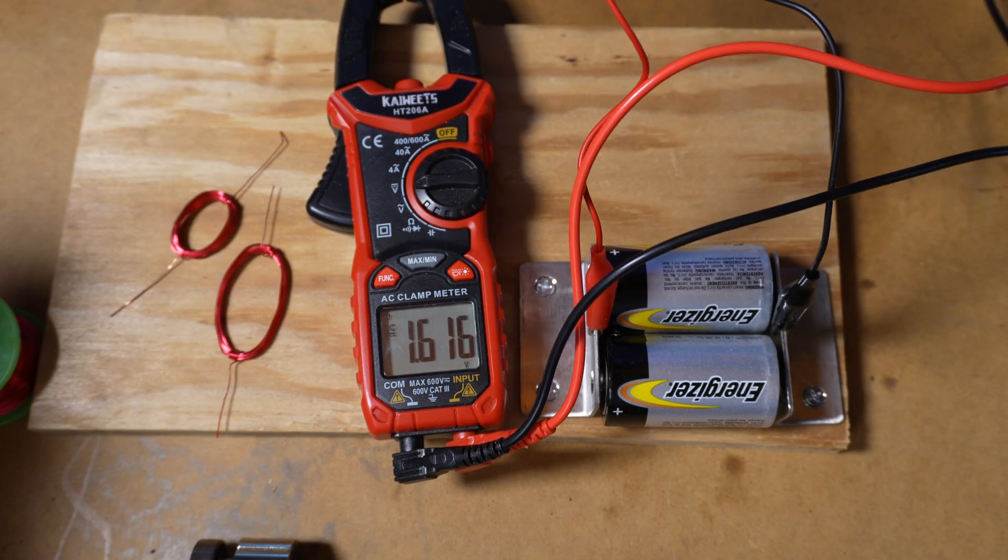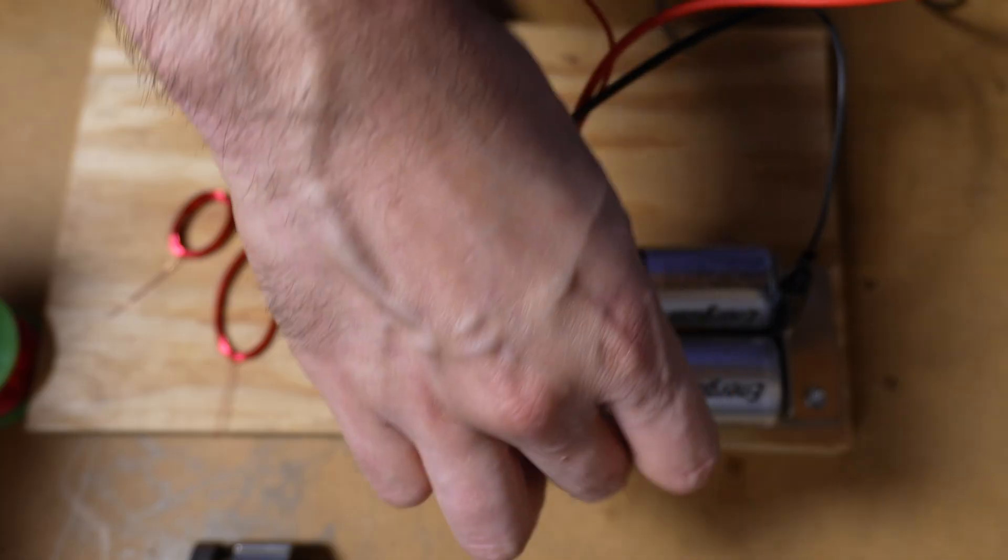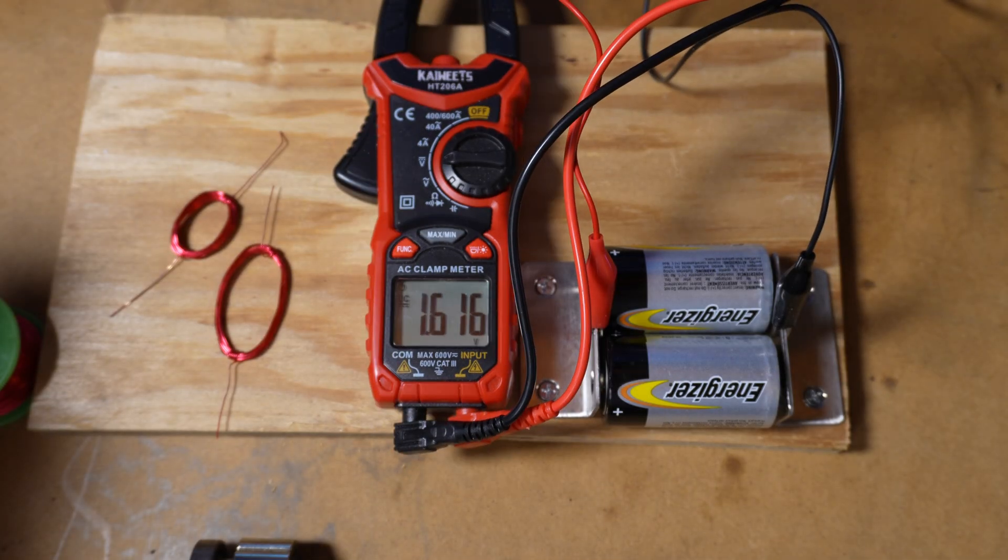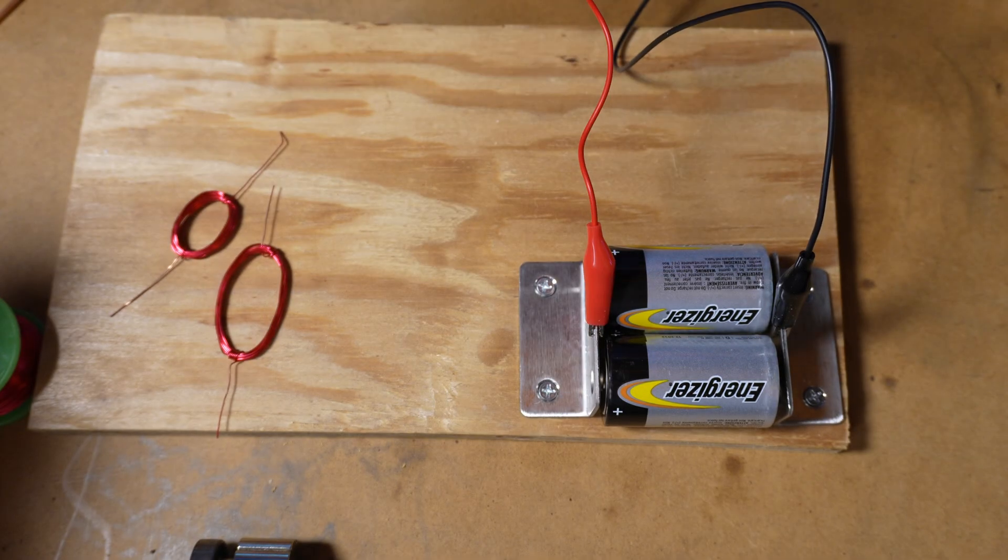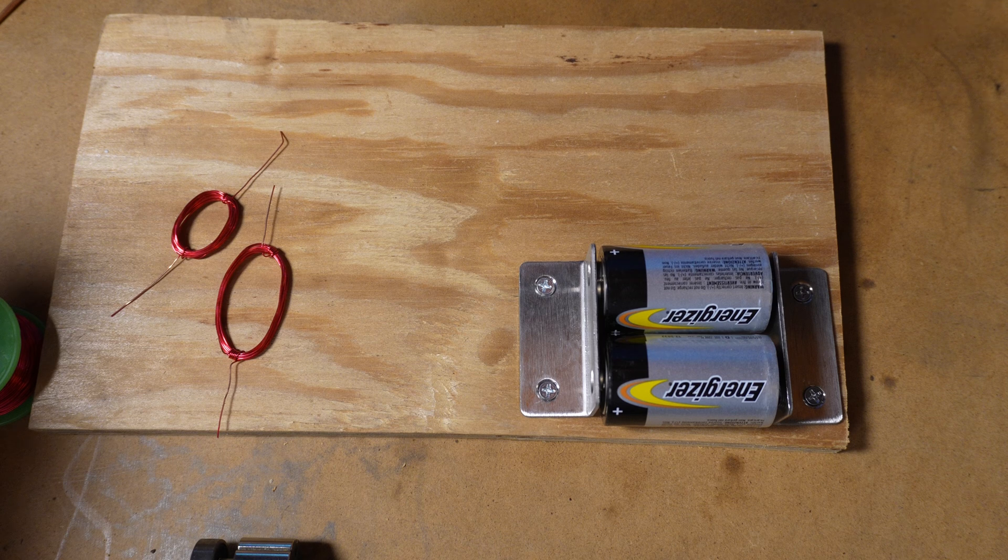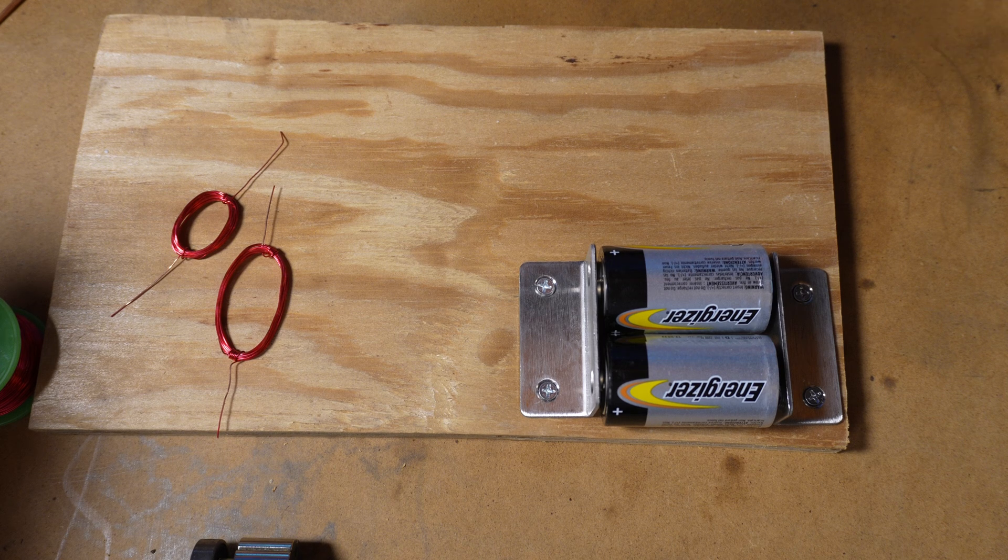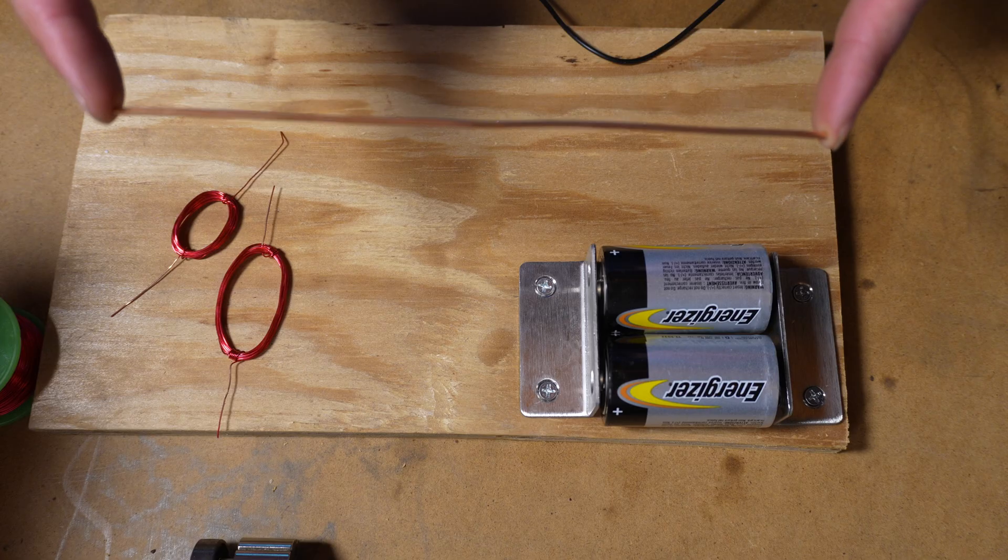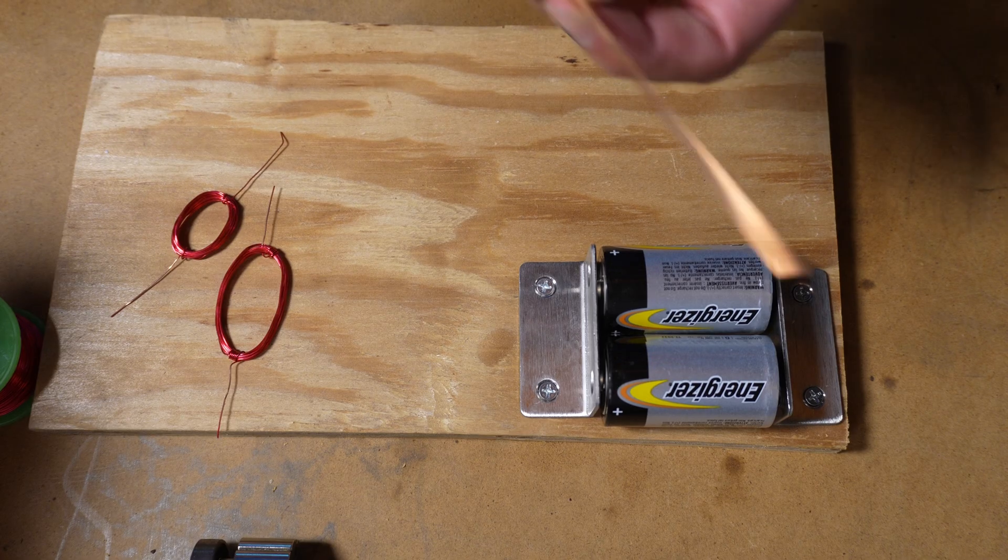We want to make sure that we have these in parallel, positive on the same bracket here, negative on the same bracket there. We have 1.6 volts. These are 1.5 volt cells. Without any load, they're gonna be sitting at about 1.6.